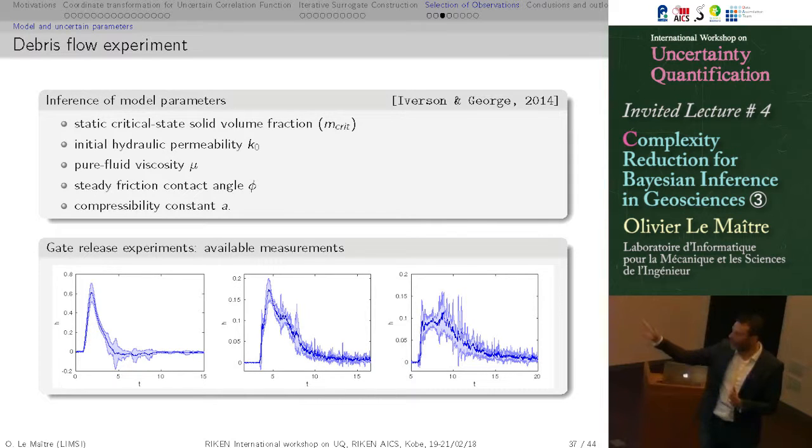So what they measure is a height of debris as a function of time. So this is a location that is close to the gate, somehow further down the slope, and even further on. So you see that initially there is no debris. Then the mass of debris is arriving. You reach maximum, and then you decay as the mass of debris continue to flow down. So these are the experimental results.